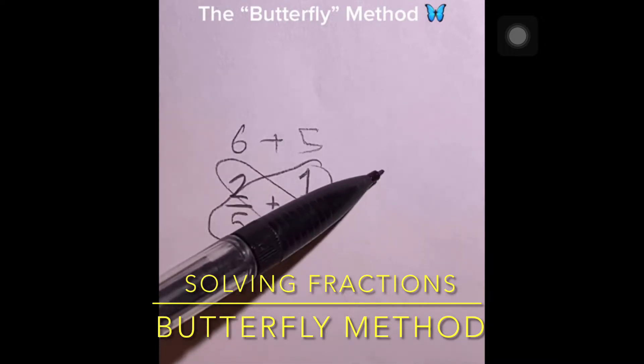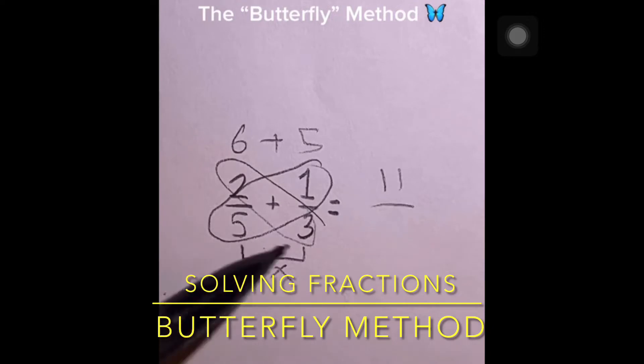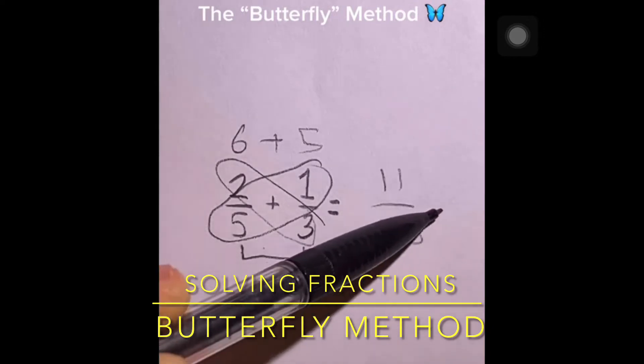You add them together to get your numerator, so our numerator is 11. And to get your denominator, all you have to do is multiply the denominators, so 5 times 3, that's 15, and our answer is 11/15.